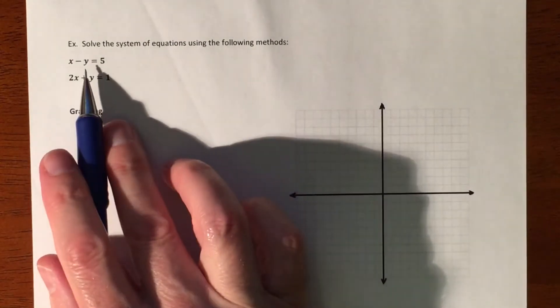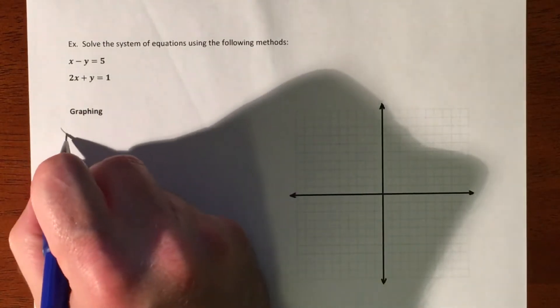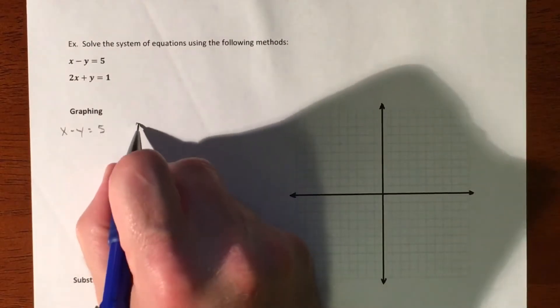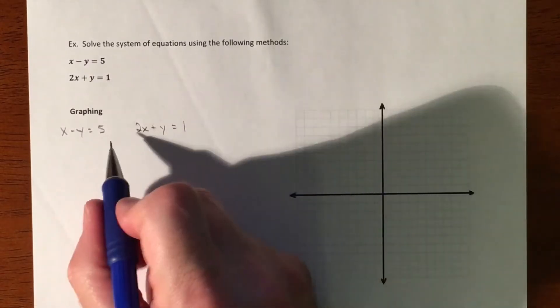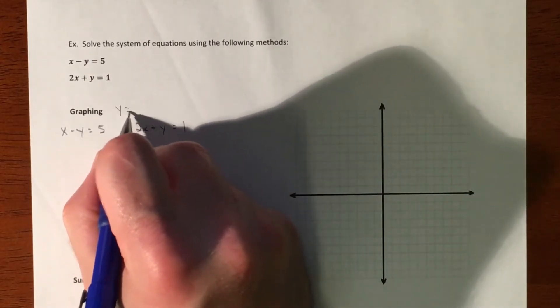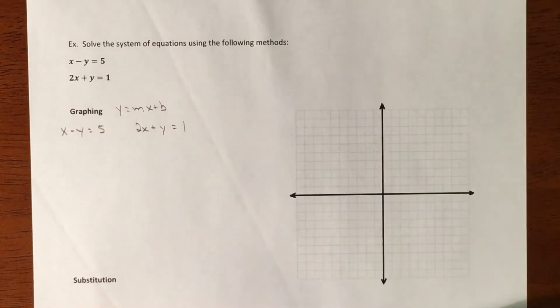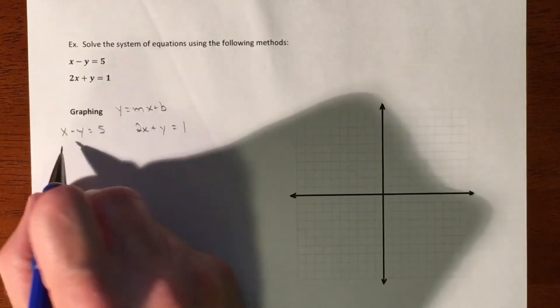So here we are. We have our two equations. If we're going to graph this, we need to get them ready to graph. So x minus y equals 5, and then 2x plus y equals 1. We're going to get these two in a graphing form, so we're looking to do y equals mx plus b, because they're linears. Two things we're going to do to get this thing ready to graph.